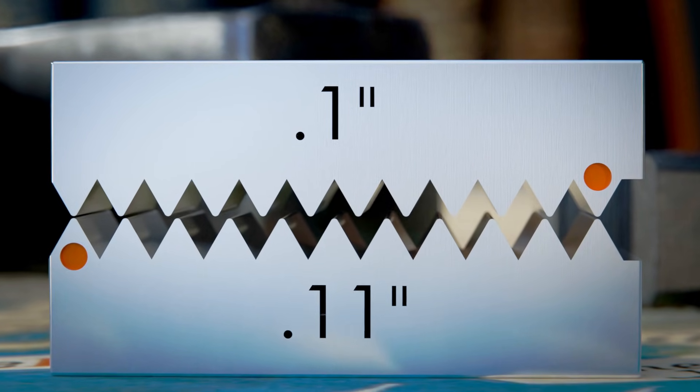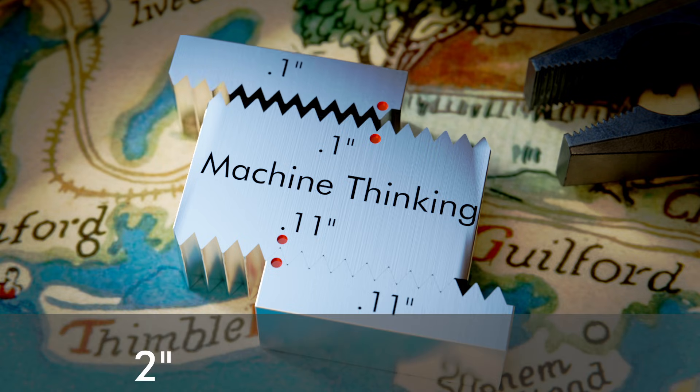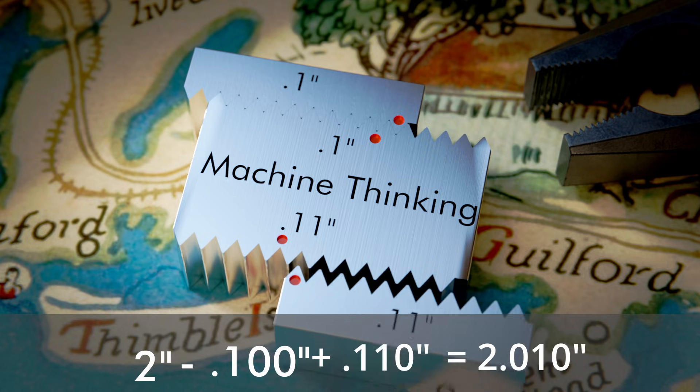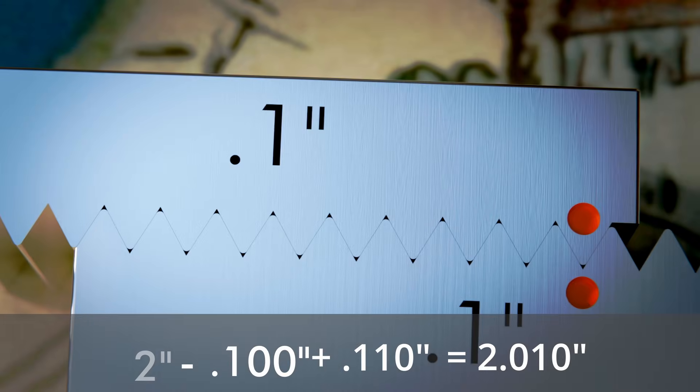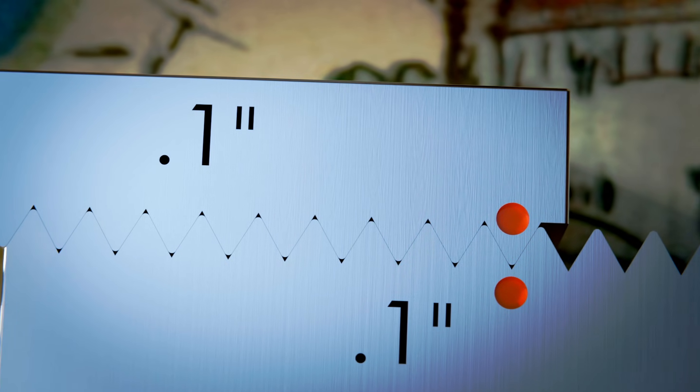If we make a base measurement that is two inches long and then move the hundred thousandths side shorter and move the other hundred and ten thousandths side longer, the net measurement is ten thousandths longer than when we started. And look, we did it with a tooth size that is easy to manufacture.